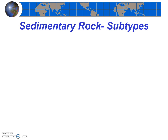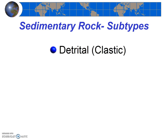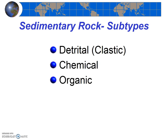Just as igneous rocks had subtypes, so too sedimentary rocks have subtypes — three of them: detrital, also called clastic; chemical; and organic. In general, the subtypes refer to the material the rock is composed of. Detrital or clastic rocks are literally made of pieces — which is what 'clast' means — pieces of mineral material like sand, gravels, and muds. Chemical sedimentary rocks are made from crystals formed as water evaporated, and organic sedimentary rocks are formed from organic material like plants.